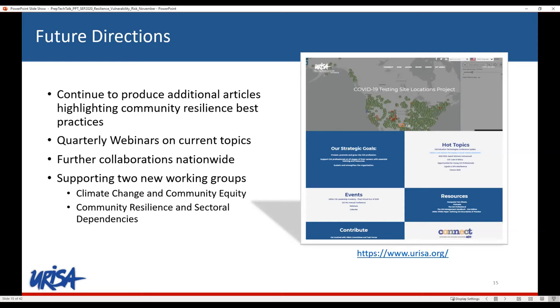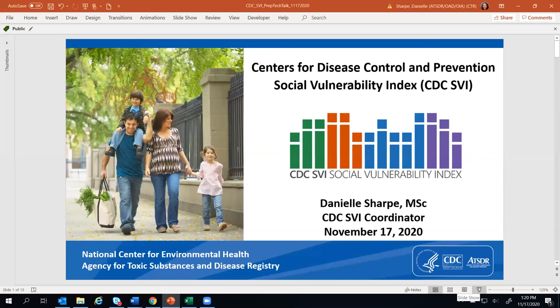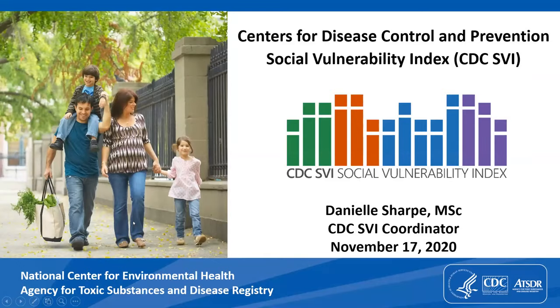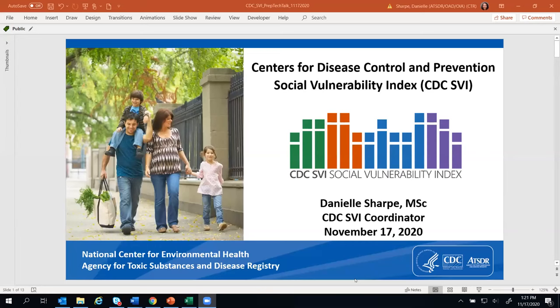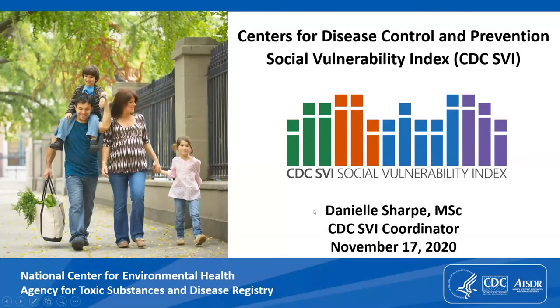Thank you, Shane. I just want to reemphasize that the work of the ERISA Community Resilience Committee really sparked the effort that led us to this Prep Tech Talk today. Next, I'm going to turn it over to our next speaker, Danielle Sharp. Danielle is a geospatial epidemiologist with the Geospatial Research Analysis and Services Program at the CDC and Agency for Toxic Substances Disease Registry in Georgia, and is the coordinator for the Social Vulnerability Index Project — an effort to map the resilience of communities when confronted by external stresses such as natural or human-caused disasters or disease outbreaks.